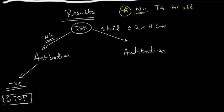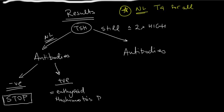If, however, your TSH was normal and your antibody screen came back positive, that is diagnostic of euthyroid Hashimoto's disease. These patients might not need to be placed on treatment now, but they do need to be followed twice a year with TFTs for the rest of their growth period, and then annually for the rest of their life. So they probably need referral to the endocrinology clinic.